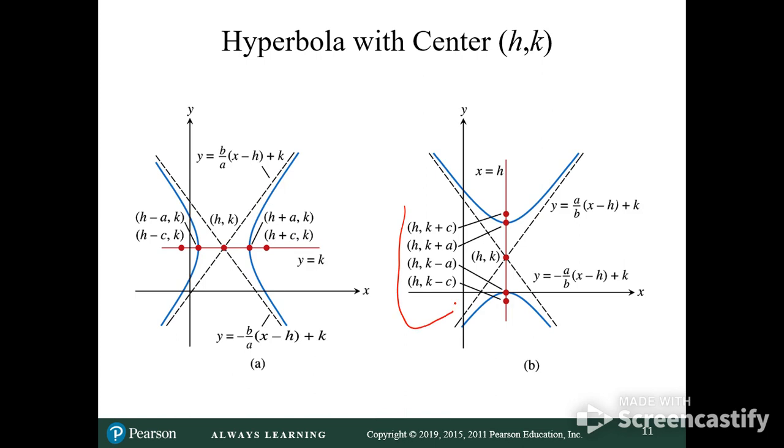It gets a little complicated here, because instead of being at zero zero, you have to add and subtract all these points on. So it gets a little complicated if we're not at zero zero. I think all of ours today are at zero zero, so I'm going to quit for today.